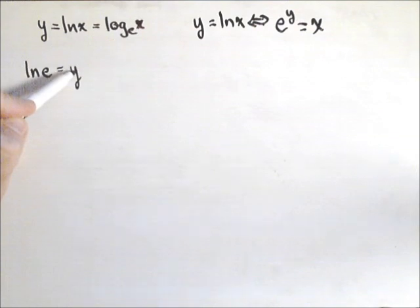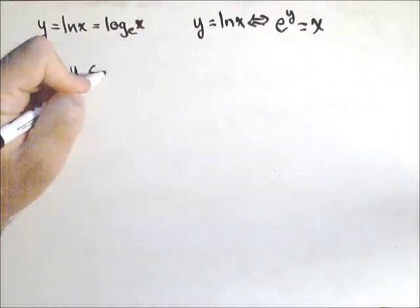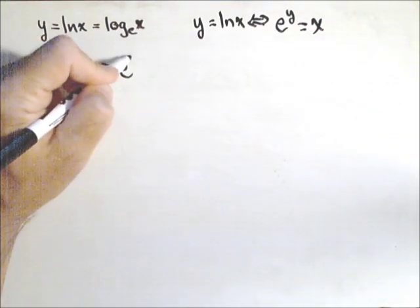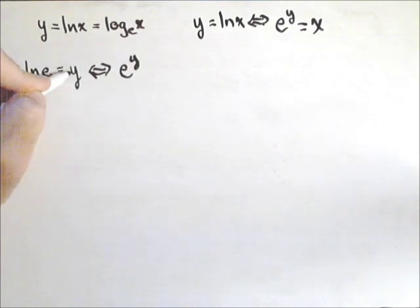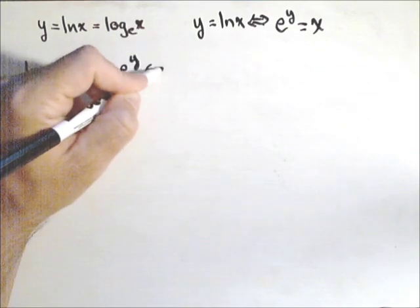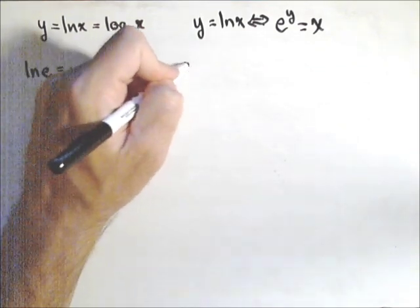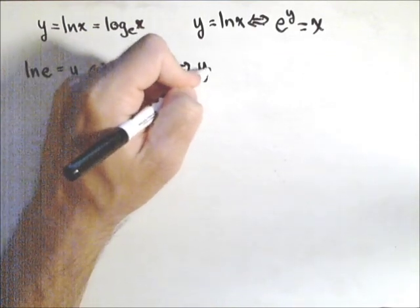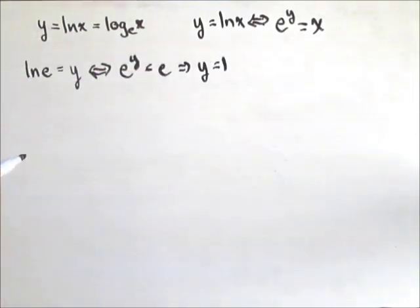The base is e, so what we have is e to the y equals e, which gives us that y equals 1. So one of the most basic properties we have is natural log of e equals 1.